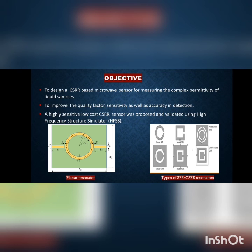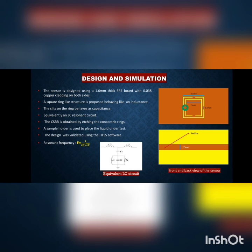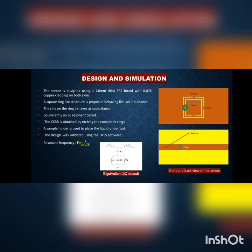In this presentation, I will discuss the CSR sensor I have designed. We designed a square CSR sensor with two splits at a 90-degree angle. We used an FR4 board of 1.6 mm thickness with 0.035 mm copper cladding on both sides.